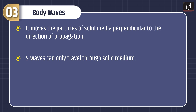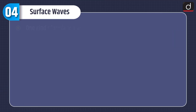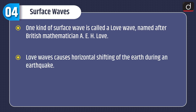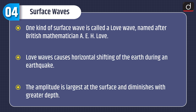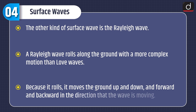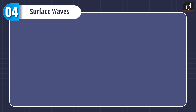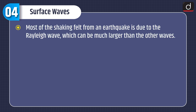S waves can only travel through solid medium. Now, surface waves: one kind is called a Love wave, named after British mathematician A.E.H. Love. Love waves cause horizontal shifting of the earth during an earthquake, with the largest amplitude at the surface diminishing with greater depth. The other kind is the Rayleigh wave, which rolls along the ground with a more complex motion. Because it rolls, it moves the ground up and down and forward and backward in the direction the wave is moving. Most of the shaking felt from an earthquake is due to the Rayleigh wave, which can be much larger than the other waves.